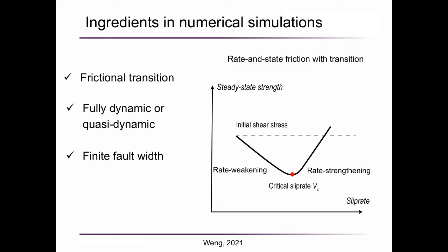In this study, I validated the theoretical prediction by a simple rate and state friction law with transition above a critical slip rate. All the simulations are single ruptures. For rupture speed close to the shear wave speed, I used a fully dynamic model. Otherwise, I used a quasi-dynamic model to simulate the slow ruptures. The models have a finite fault width.